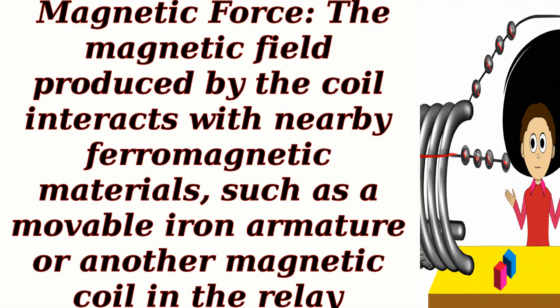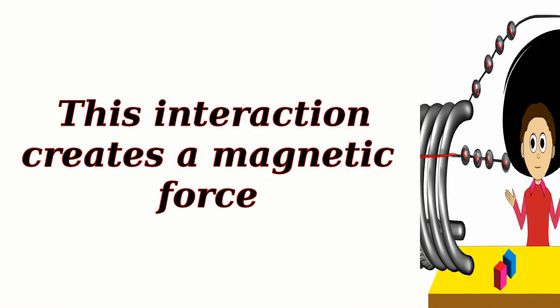Magnetic force: The magnetic field produced by the coil interacts with nearby ferromagnetic materials, such as a movable iron armature or another magnetic coil in the relay. This interaction creates a magnetic force.